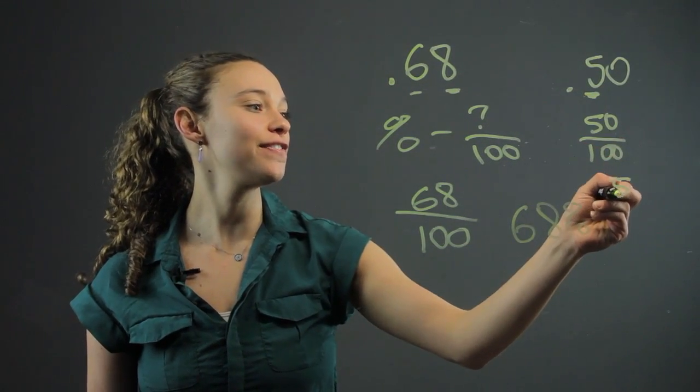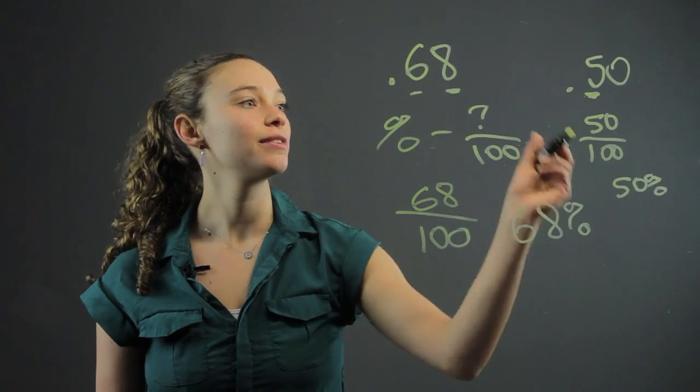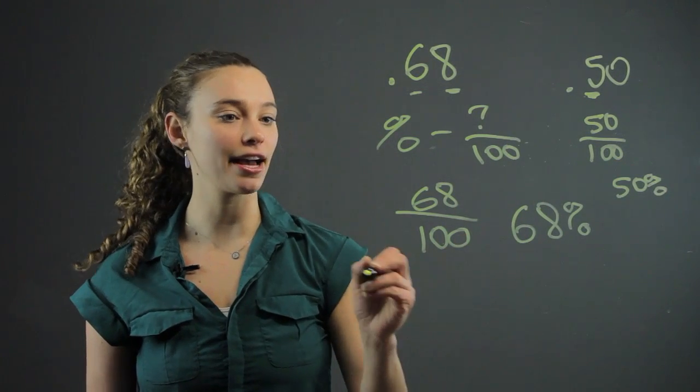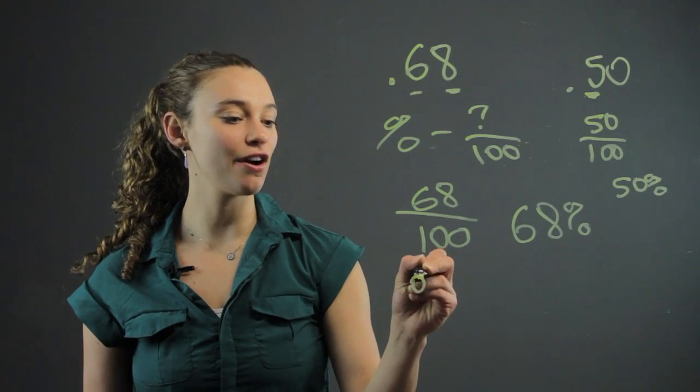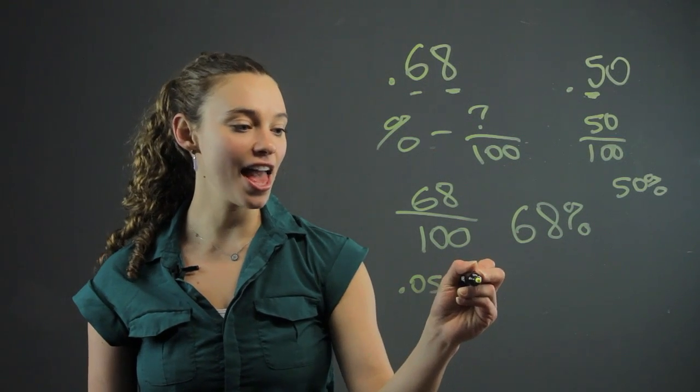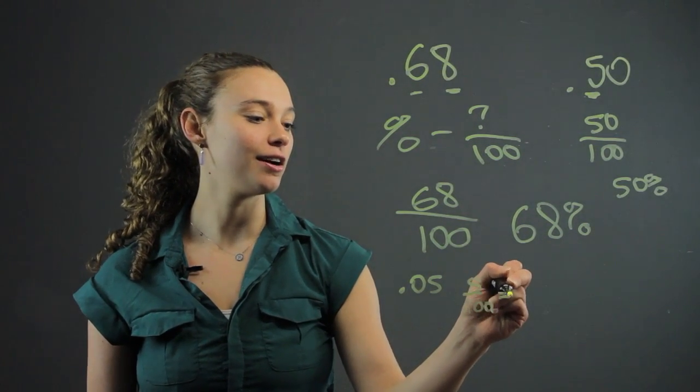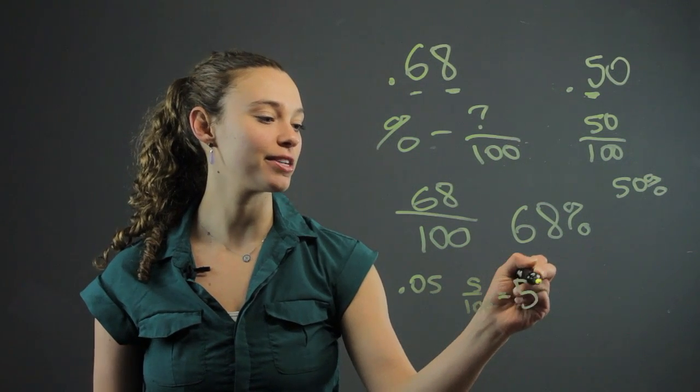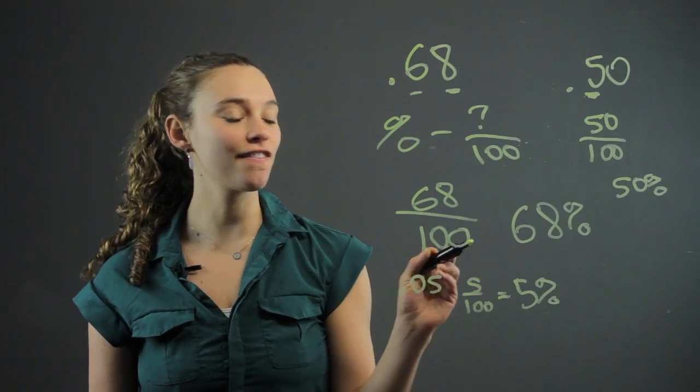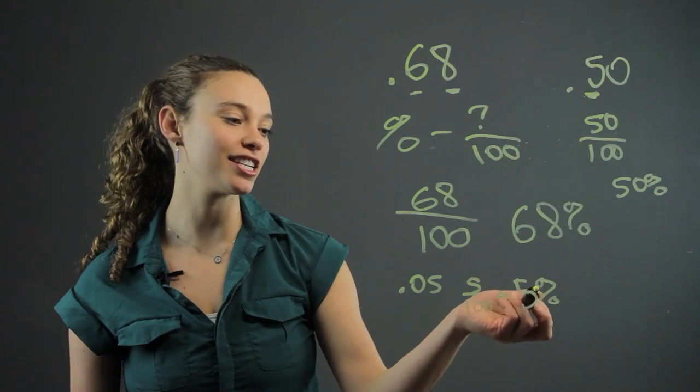And that is 50%. Notice how that's different than 0.05. That is 5 over 100, which is 5%. So be careful when you're converting decimals into percentages.